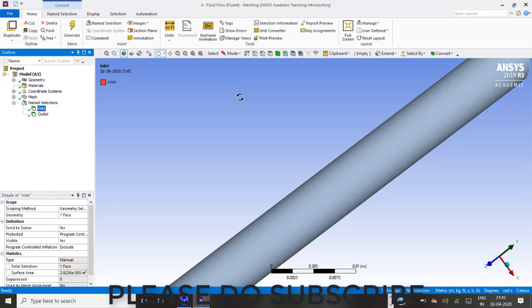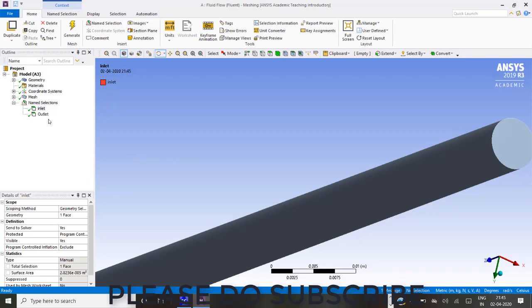This is the geometry which I have created in Spaceclaim. This is my outlet.